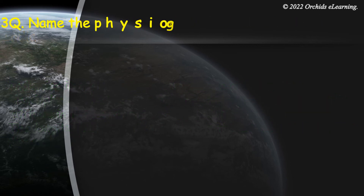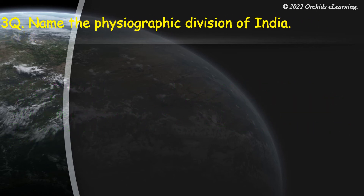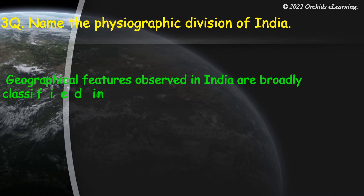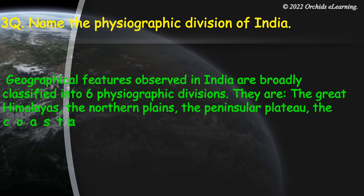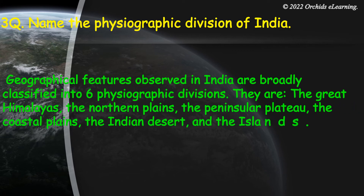Name the physiographic divisions of India. The geographical features observed in India are broadly classified into six physiographic divisions: the Great Himalayas, the Northern Plains, the Peninsula Plateau, the Coastal Plains, the Indian Desert, and the Islands.